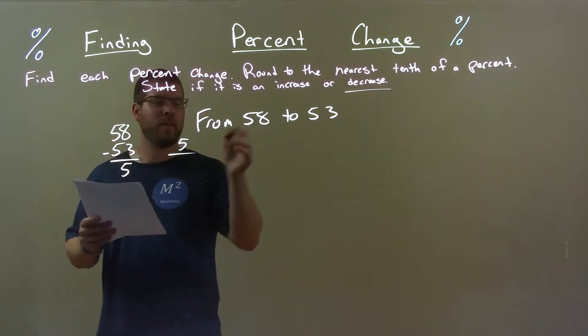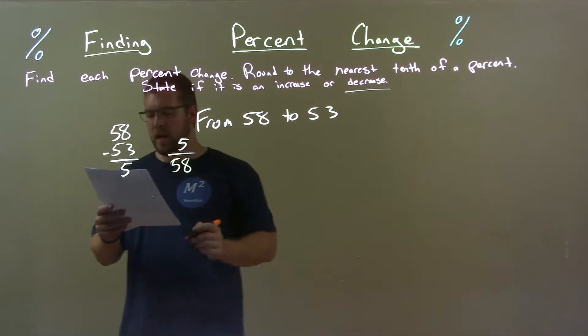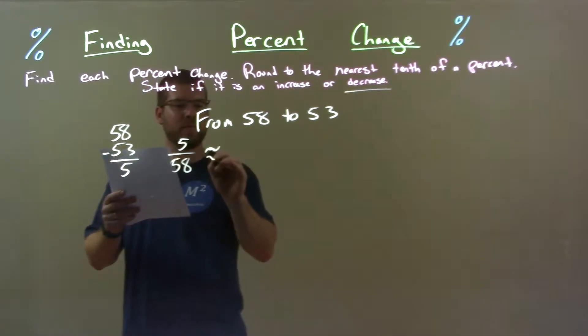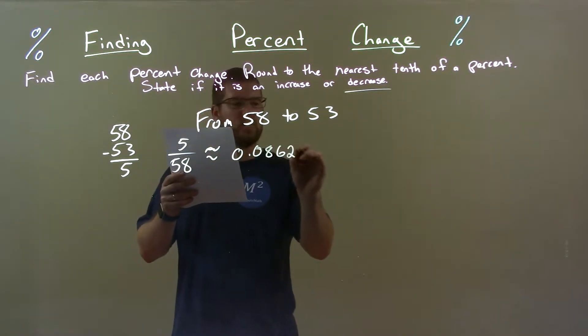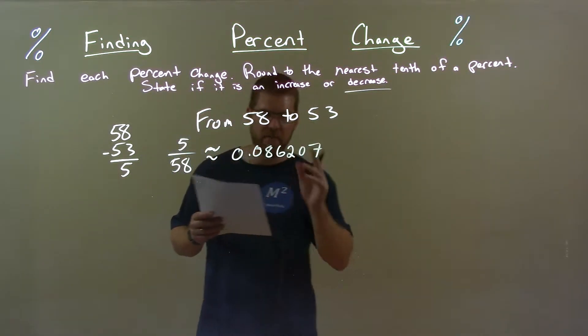Take that number 5 divided by the first number 58 and we got a decimal here, okay. Approximate 0.08620 and a 7 right there.